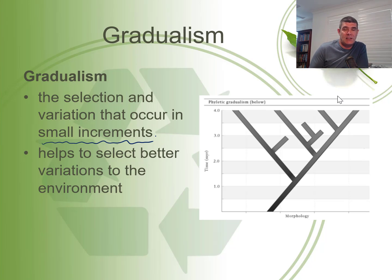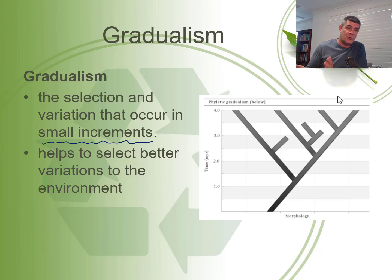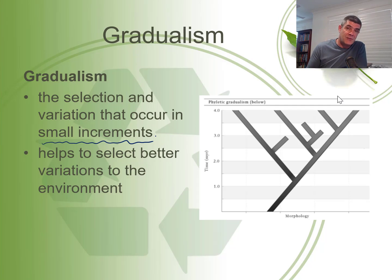Darwin didn't understand genetics the way that Mendel presented it, and certainly not the way we understand it today, which has built significantly on Mendel's work. We now know that genes are a very important part of variation. Mutations that occur can change the way those genes are expressed and the proteins they produce. A small mutation can have no effect on protein expression at all, or it can have quite significant impacts — and pretty much anything in between. Those significant impacts can be detrimental to an individual, or they may be beneficial, conferring some advantage that allows it to survive and pass those beneficial genes to offspring, slowly increasing their proportion in the gene pool.